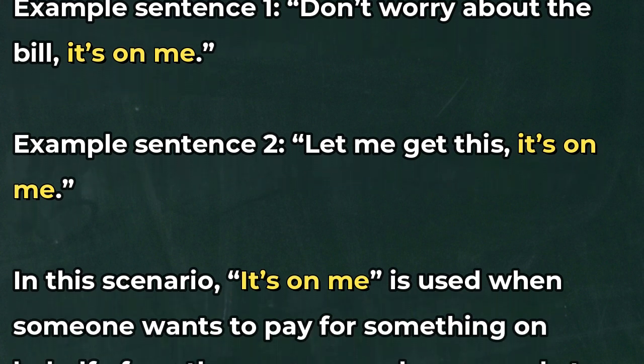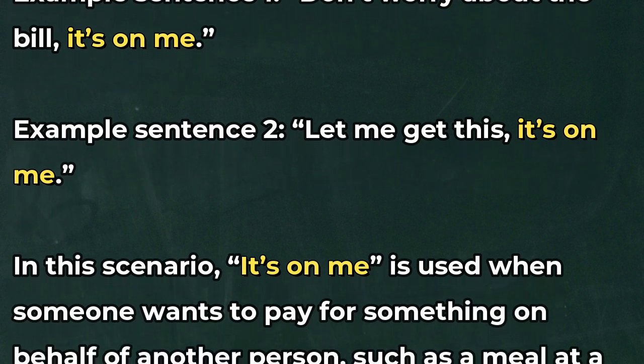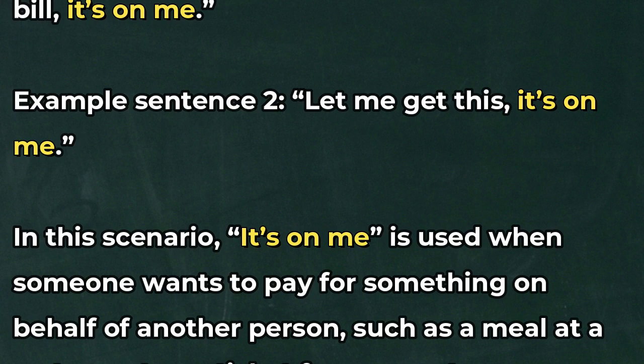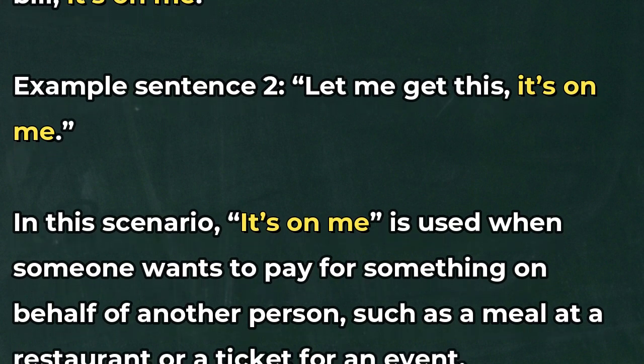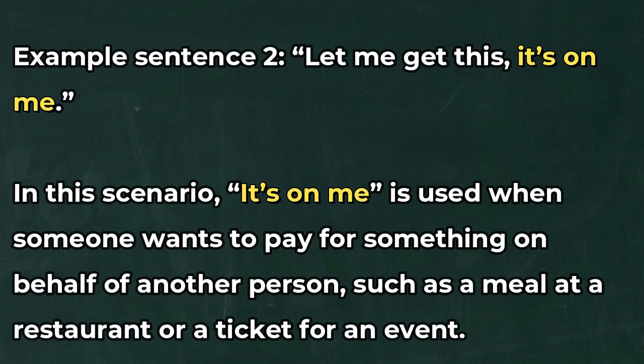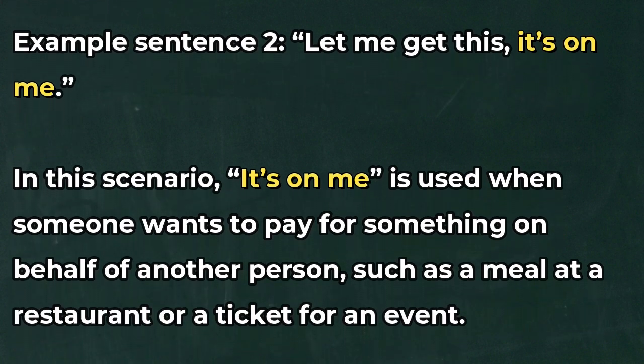In this scenario, 'it's on me' is used when someone wants to pay for something on behalf of another person, such as a meal at a restaurant or a ticket for an event.